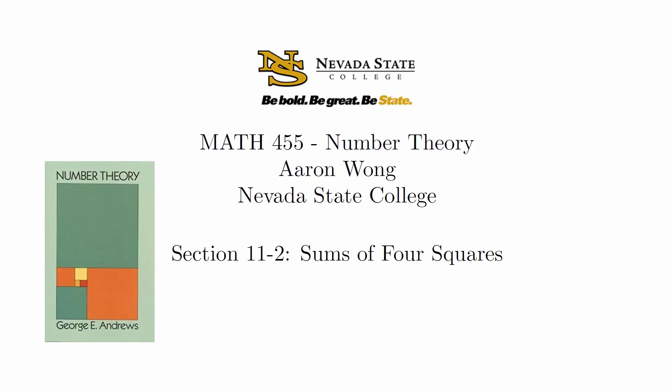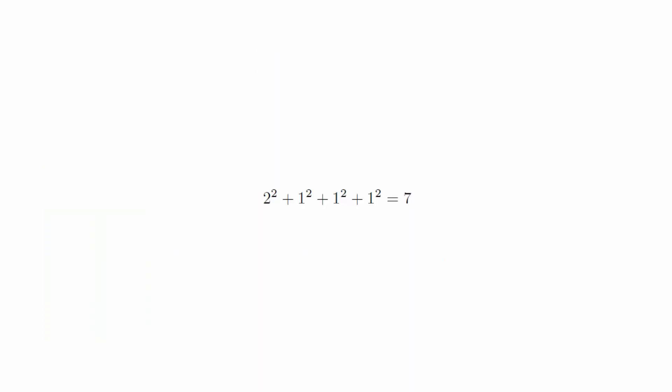We've seen that we can only write certain natural numbers as the sum of two squares. How many squares would we need in order to write every single natural number? With a little bit of experimentation, you will find that you can't write the number seven as the sum of three squares, but you can do it with four. And it turns out that four is enough for any natural number. But in order to prove it, we must first prove a lemma about the sum of three squares.